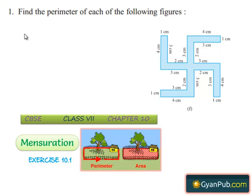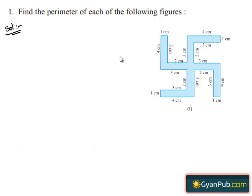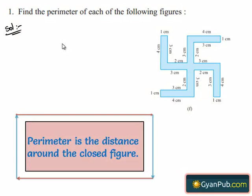Moving on to the last bit of the first question, let's do the solution. We have to find the perimeter of the given figure. First we should know what is meant by perimeter. Perimeter is the distance covered along the boundary forming a closed figure when you go around the figure once.